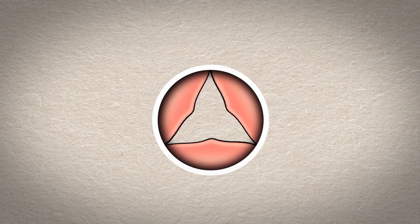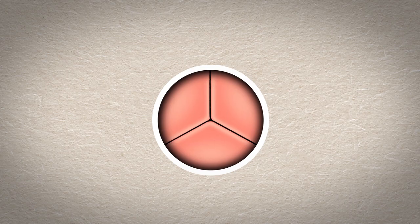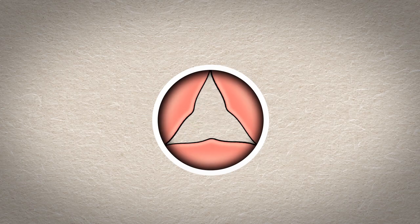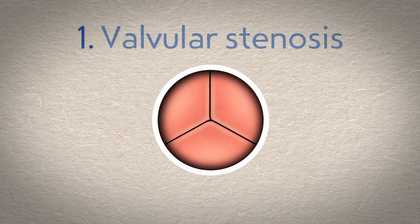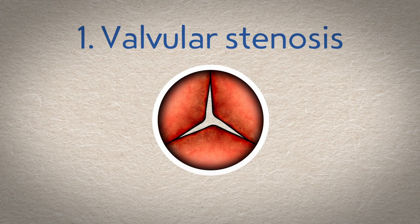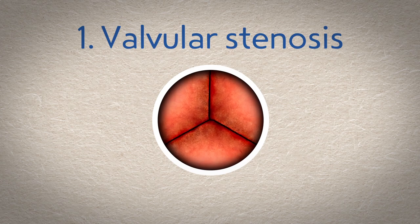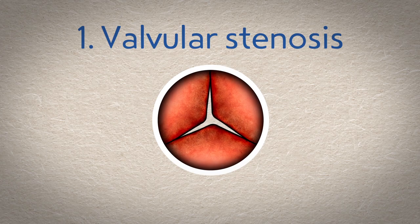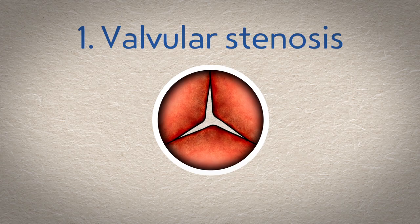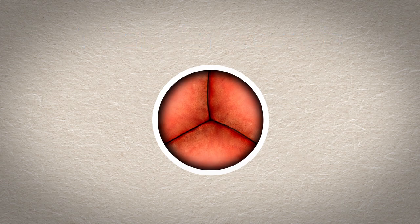There are several types of heart valve disease, but they generally fall into one of two categories. Valvular stenosis occurs when the valve's leaflets become stiff or fused and won't open fully. All four of the valves can develop stenosis, leading to the conditions tricuspid stenosis, pulmonic stenosis, mitral stenosis, and aortic stenosis.